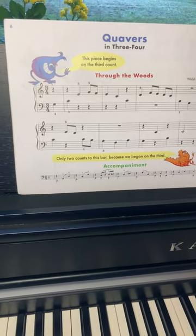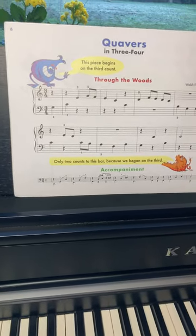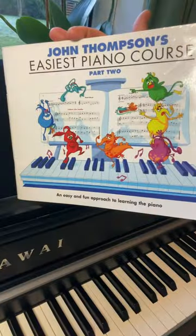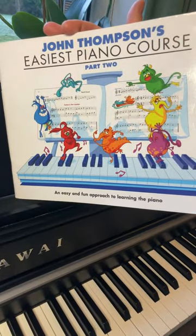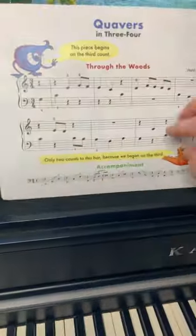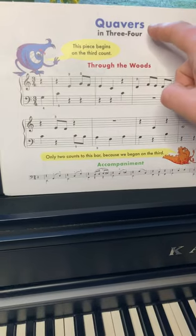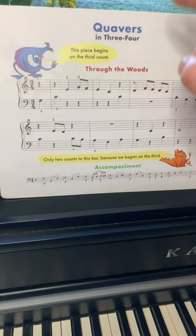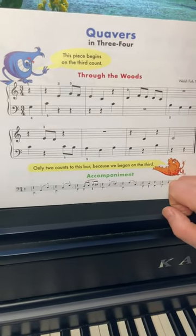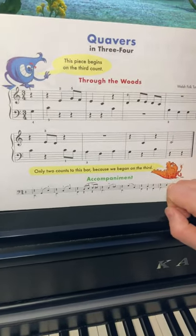Today I want to play for you 'Through the Woods'. We are on page 6 of John Thomson's Easy Piano Course Part 2, and this is the piece using quavers, or 8th notes if you are using the American version of the book, in 3/4.